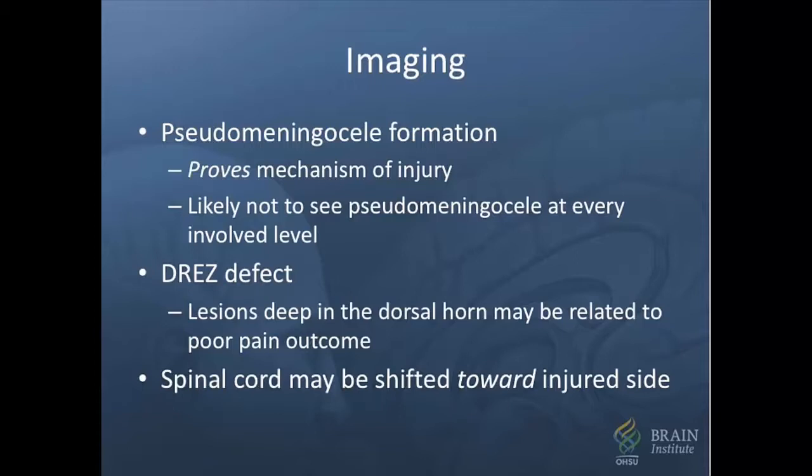Brachial plexus avulsion pain syndrome can be strongly suspected from the mechanism of injury and the patient's examination. However, imaging can be quite helpful in confirming the diagnosis. Pseudomeningocele seen on MRI imaging are probably the most characteristic MRI finding. Finding pseudomeningocele on MRI confirms the mechanism of injury, although it is not likely that you will find pseudomeningocele formation at every involved spinal level. Oftentimes, pseudomeningocele would be seen at only one or two levels, which confirms the mechanism of injury.